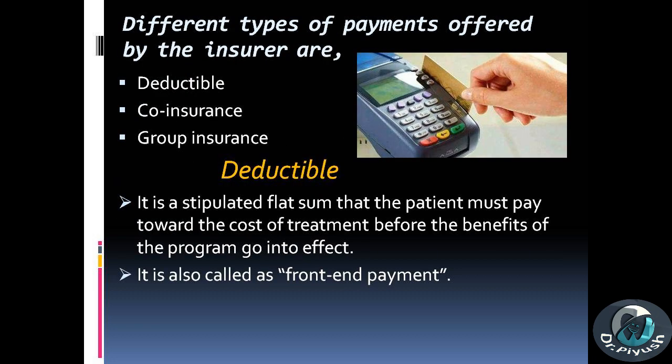Different types of payments offered by the insurer are: deductible, co-insurance, and group insurance. Deductible: it is a stipulated flat sum that the patient must pay toward the cost of treatment before the benefits of the program go into effect. It is also called front-end payment.